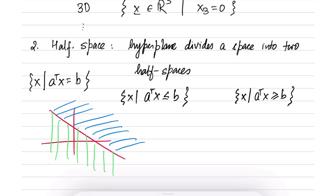So what kind of set is a half space? We have already seen that it is not an affine set. Half space is not an affine set generally, but it is a convex set. It is indeed a convex set.